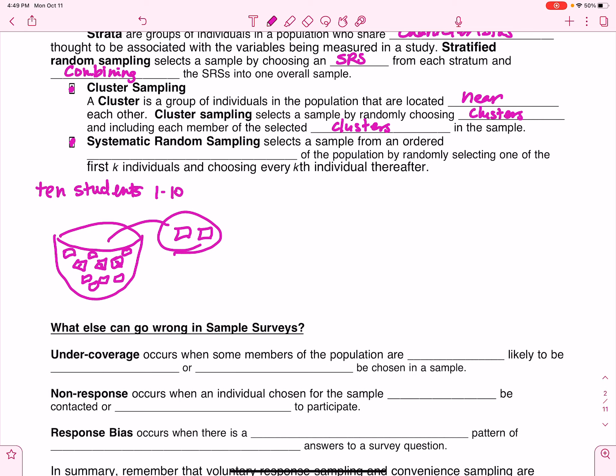And then, of course, we come to systematic random sampling. And this is just going to select a sample from an ordered arrangement of the population by randomly selecting one of the first K individuals and choosing every Kth individual thereafter. So, in other words, let's say I had everybody in my class. Let's use fourth period.